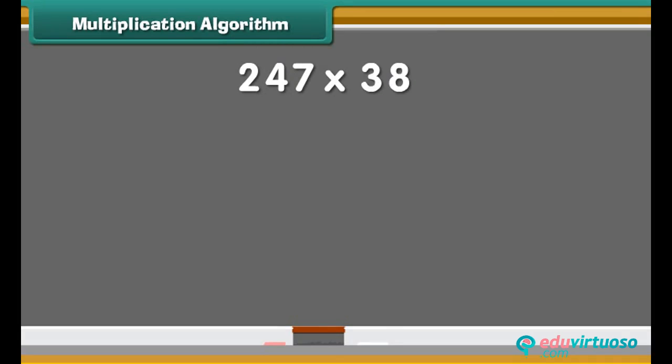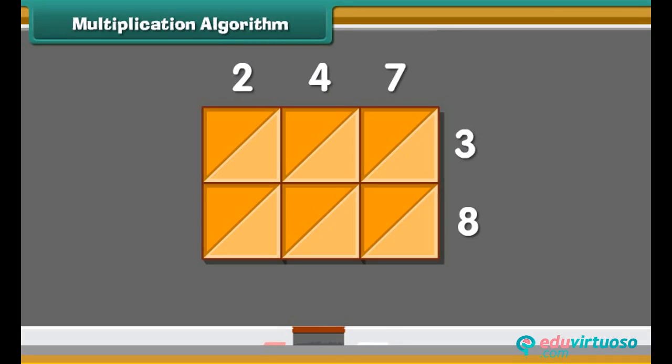Now we will multiply 247 and 38 by lattice algorithm. We will multiply the numbers one by one and write answers in this box. Write 10's in 10's box and 1's in 1's box. Firstly, multiply 2 and 3. Answer is 6. Write 1's in lower box and 10's in upper box. Then multiply 4 by 3. 4 times 3 are 12. Write answer in the box. Now 7 times 3 are 21.